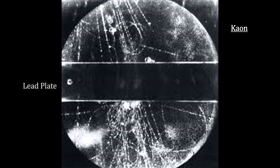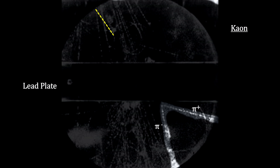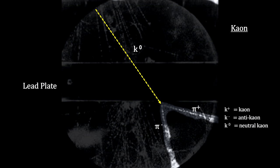Also in 1947, another particle called the kaon was discovered by George Rochester and Clifford Butler, using cosmic rays. Just below the lead plate, in the lower right-hand quadrant, you see an inverted V that extends to the lower right. Measuring the momentum and charges, they determined that they were a pion and an anti-pion. Rochester and Butler concluded that this had to be a photographic record of a novel phenomenon: the decay of a previously unknown, neutral, heavy particle, later called the kaon. This represented the first time we deduced the existence of a particle from its decay components.